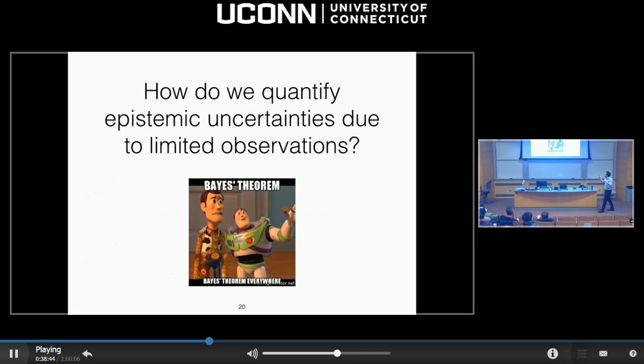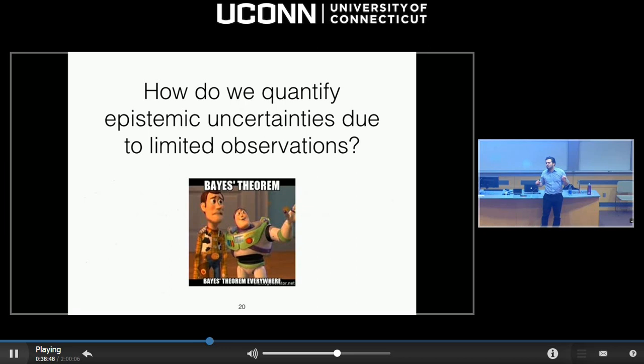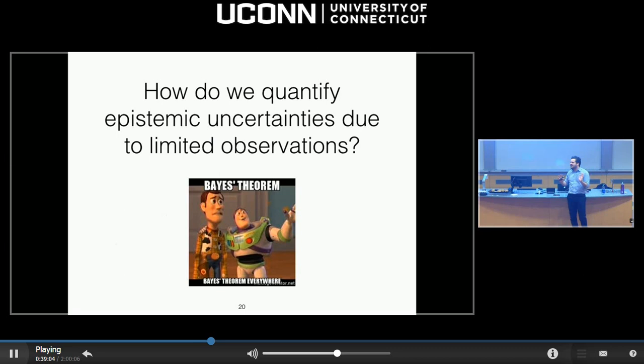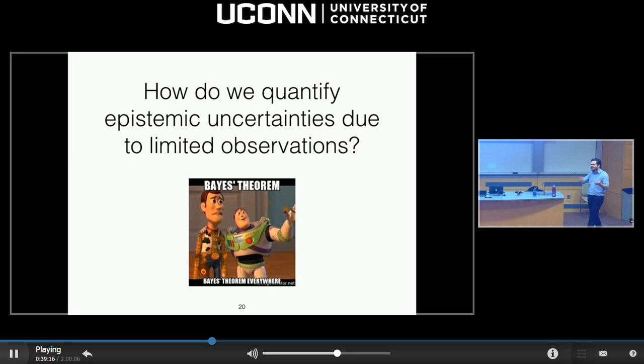How do we quantify epistemic uncertainty due to limited observations? The answer is Bayes' rule — because it's really a rule, not a theorem. You assign probabilities to everything, observe data, and use Bayes' rule to condition on that data to get posteriors. You just use the rules of probability and nothing else — you don't have to invent anything. Just use probability theory rules all the way through. At some point you have to do a little bit of math, and that's where collaboration comes in.